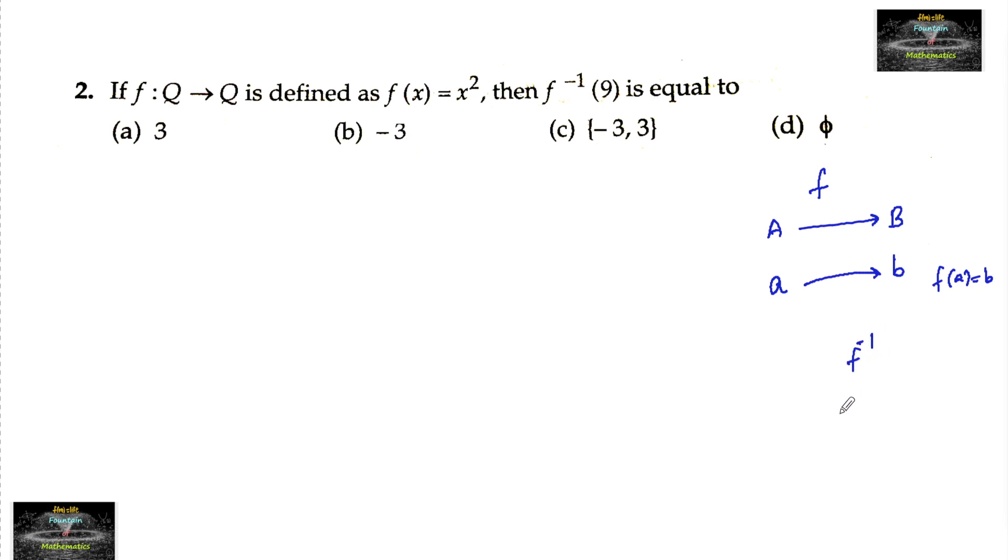Now if I consider its inverse relation, domain and codomain will interchange B to A, then the image of b will come as a.